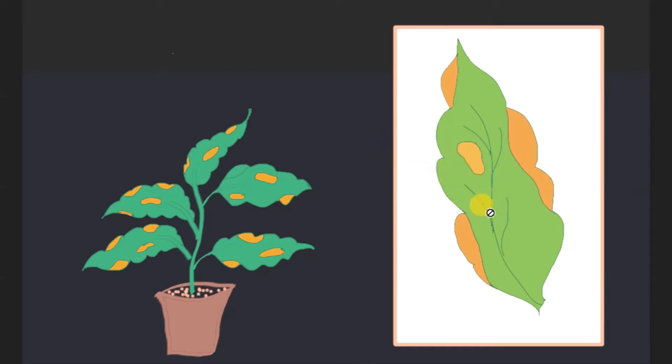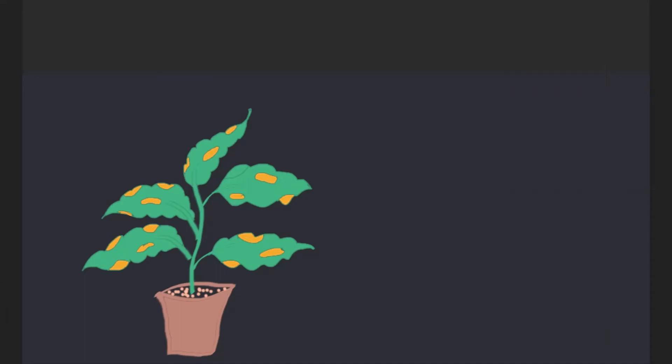We will place this leaf over the sheet and we will trace it. We will mark the green and yellow parts of this leaf also, so that at the end of this activity we can compare it with the results.